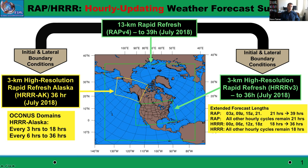The model currently in operations for the RAP is version 4, doing out to the 39-hour forecast. Version 5 will become operational sometime this coming spring and will go out to a 51-hour forecast. The RAP and HRRR are both based off the WRF-ARW core, so it's a community model. We work with Greg Thompson and NCAR on microphysics, have our own development on the PBL scheme and the land surface model. In the RAP 13-kilometer model we parameterize cumulus convection using the Grell-Freitas scheme.